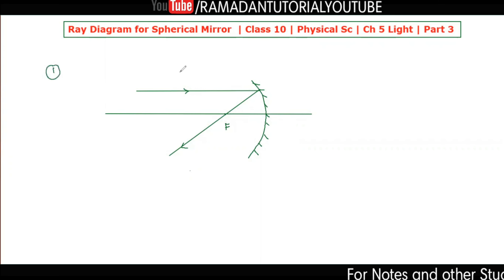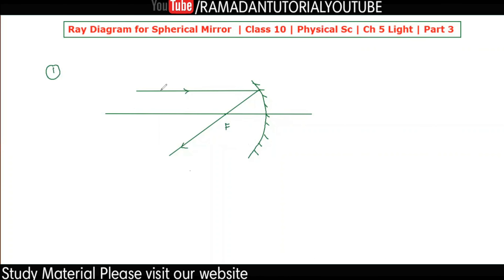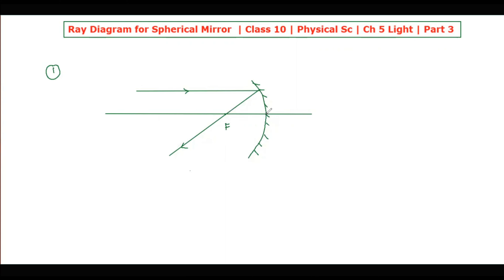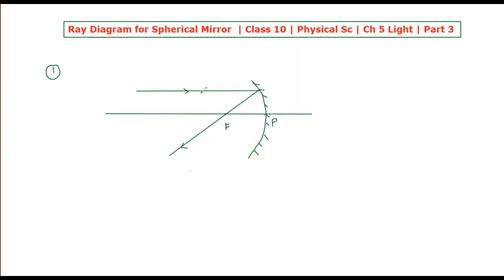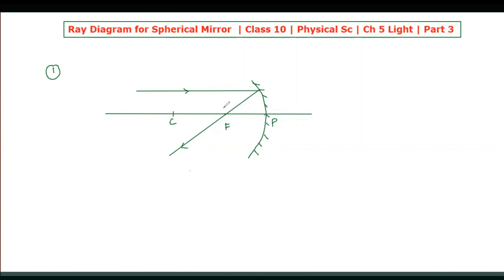This is the first ray of light. We are going to discuss four rays in total. When you make a diagram, you should have an idea about all four rays — though three will be enough. The first ray is parallel to the principal axis and is reflected through the focus. Key terms: the pole, the principal axis, the focus, and if you take the focus distance twice, that is the center of curvature. The radius of curvature is twice the focal length. We covered this in part 2.